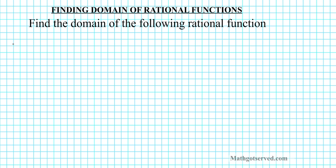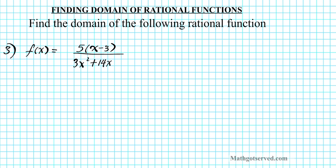We're looking at f of x equals 5 times the quantity x minus 3, divided by 3x squared plus 14x minus 5.